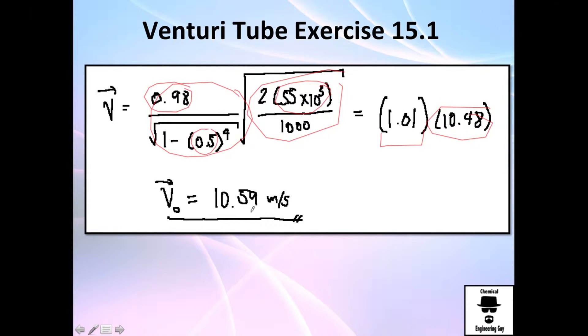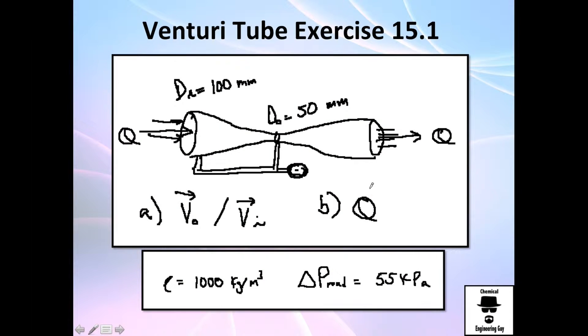So you got about 10.59 meters per second in that little hole. Okay, so we already answered question number A.